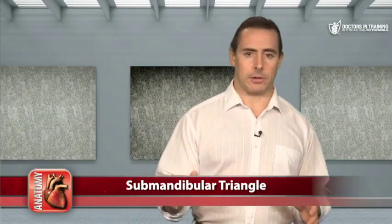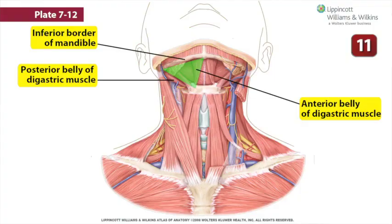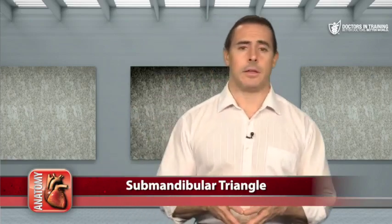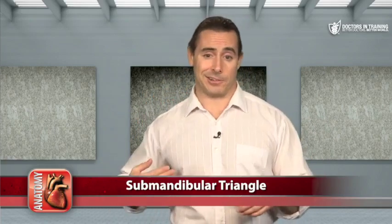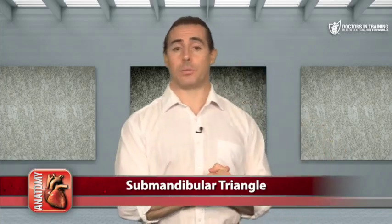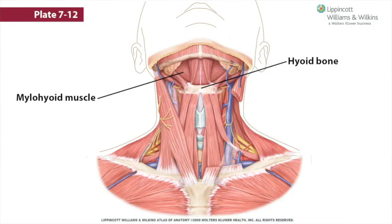The submandibular triangle is notable for containing the submandibular gland. Its boundaries are the inferior border of the mandible and the anterior and posterior bellies of the digastric muscle. The facial vein runs superficial to the submandibular gland and the facial artery runs deep to it; both are occupants of this triangle. The hypoglossal nerve passes through it as well. Part of the floor is formed by the mylohyoid muscle, which runs from the mylohyoid line on the posterior side of the mandible to the hyoid bone, forming the floor of the mouth. It is innervated by the mylohyoid nerve, a branch of the mandibular division of the trigeminal nerve.